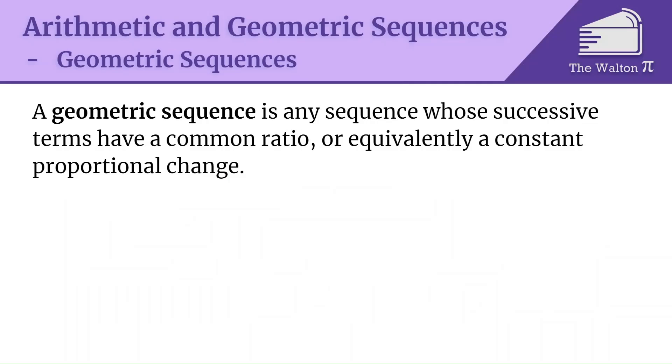Now a geometric sequence is any sequence whose successive terms have a common ratio, or equivalently, a constant proportional change. This means that g_n divided by g_{n-1} is the same constant value for all n.